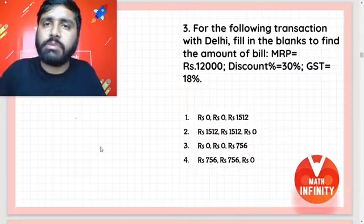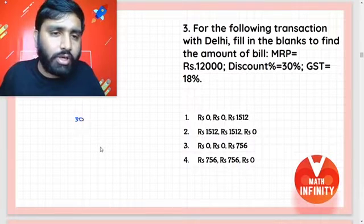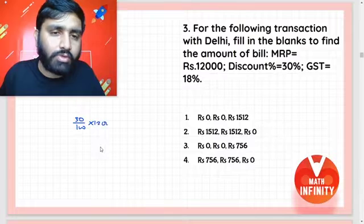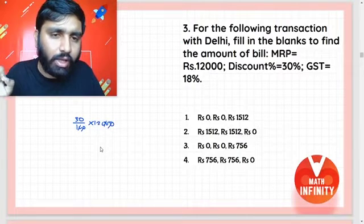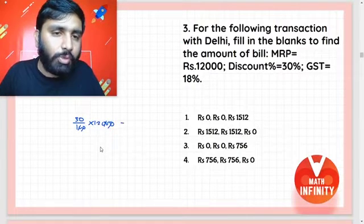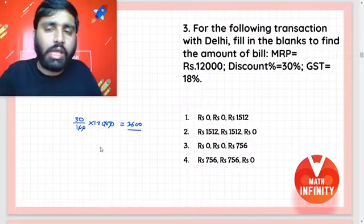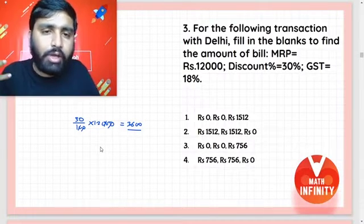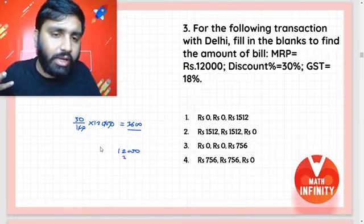So let me tell you — the 30% discount: 30 upon 100 into 12,000 equals ₹3,600. So the taxable amount after discount is 12,000 minus 3,600, which equals ₹8,400.